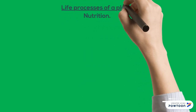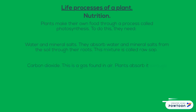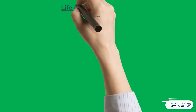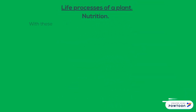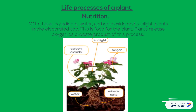Plants make food through photosynthesis. They need water and mineral salts, which they absorb through their roots. This mixture is called raw sap. They also need carbon dioxide, a gas found in air, which plants absorb through their leaves. And finally sunlight, which is absorbed by the leaves. With these three ingredients — water, carbon dioxide, and sunlight — plants make elaborated sap. This is food for the plant. Plants release oxygen as a waste product of this process. Here you are a diagram of how they make their own food.